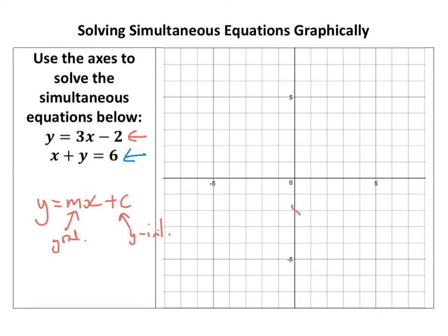The y-intercept is minus 2, so it crosses the y-axis at minus 2. The gradient means for every one I go to the right, I go up 3. You're going to use a ruler, obviously, to do this.